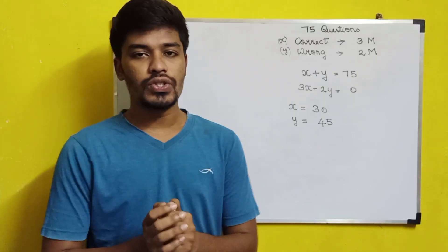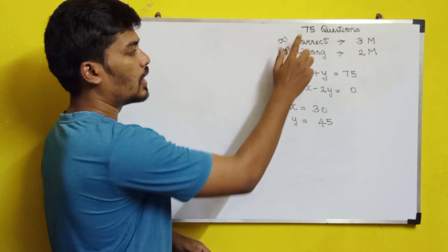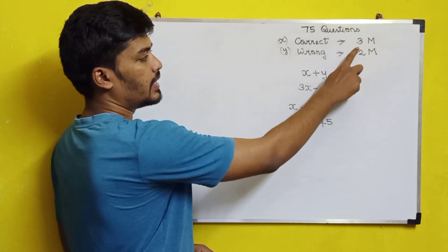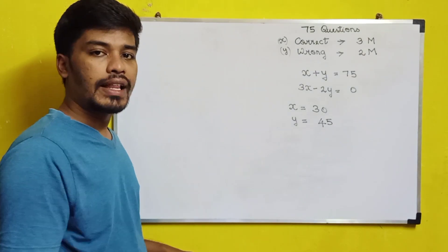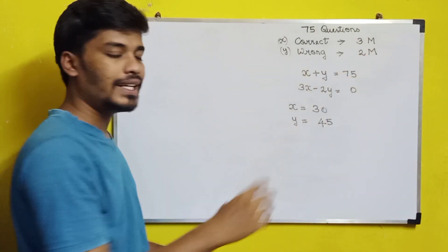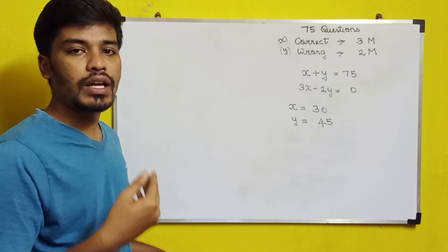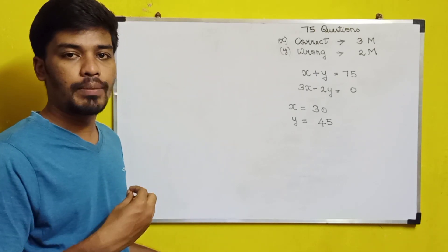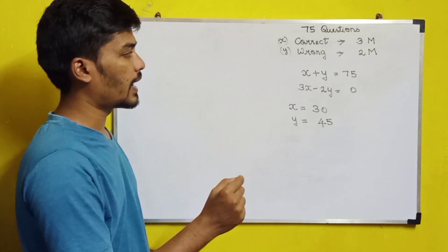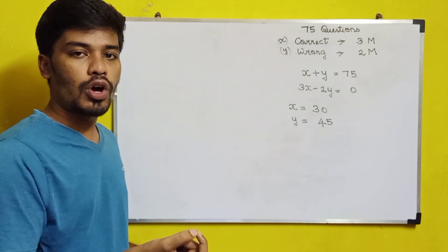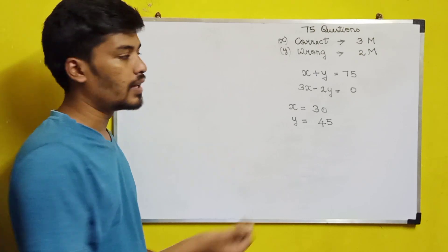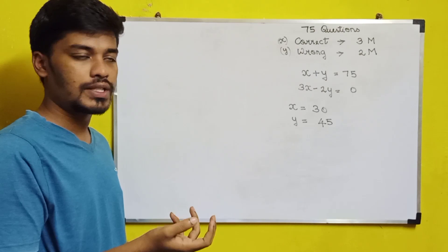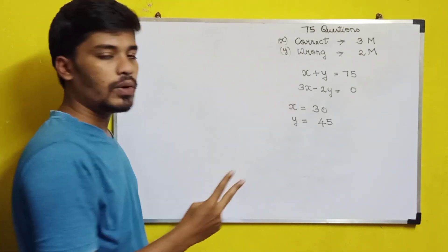In this test, there are 75 questions total. If you answer correctly, you get 3 marks; if you answer incorrectly, you get minus 2 marks. The total score is 0. We set up two equations using variables x for correct answers and y for wrong answers. We know the total number of questions is 75, so we need two equations to solve this.